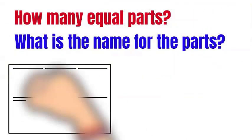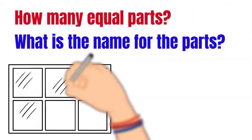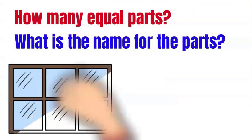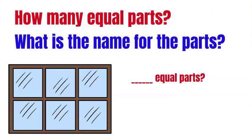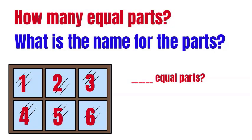Now, how many equal parts and what is the name for each part? Here is one part of the window — two, three, four, five, six equal parts. So we have six equal parts and that's considered sixths.